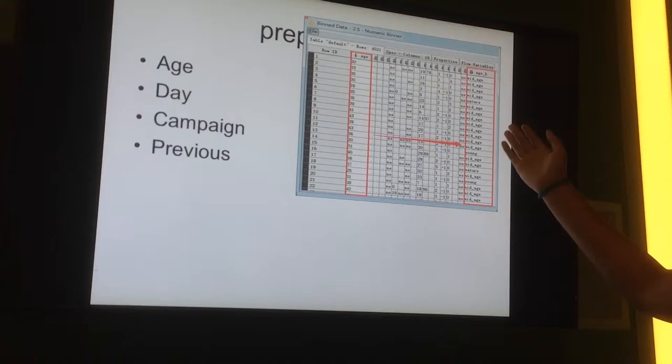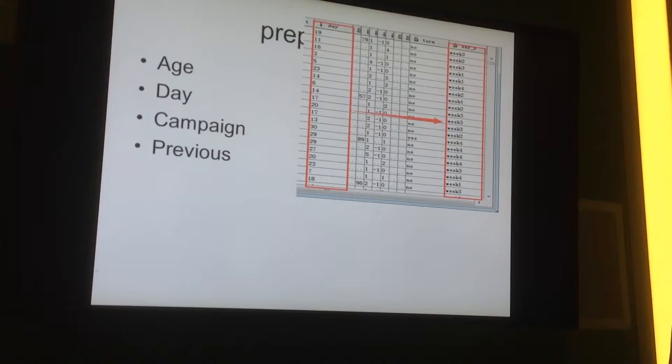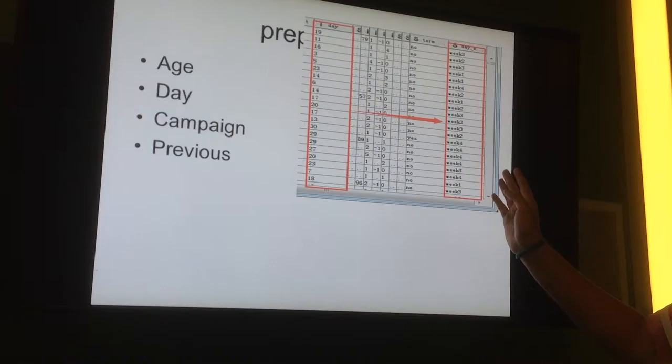After that, we got a new column of the age, which looks like that. And for day attributes, we do the same thing, similar to age attributes, because there are maximum 31 days. So we separate them into four groups: Week one, week two, week three, and week four. After preprocessing, it looks like that.